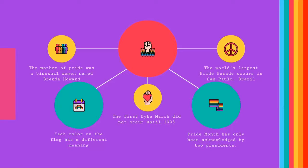Here are five facts that you can use to spread awareness about the LGBTQ community. First, the mother of Pride was a bisexual woman named Brenda Howard. Second, the LGBTQ community is represented by a rainbow flag and each color on this flag has a different meaning. Third, the first Dyke March did not occur until 1993. Fourth, Pride Month has only been acknowledged by two presidents — Clinton and Obama. And lastly, the world's largest Pride parade occurs in São Paulo, Brazil.